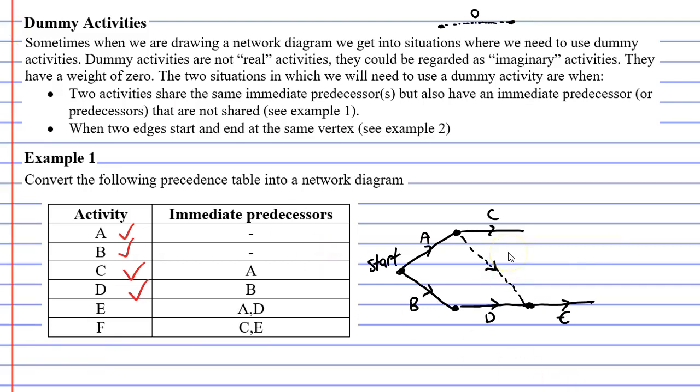And because a dummy activity has a weight of zero, we get the same result as if activity E had come directly after activity A. So we can now tick off activity E and we might as well finish this off.